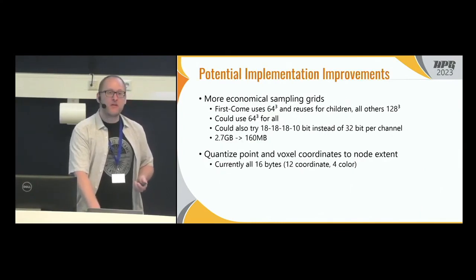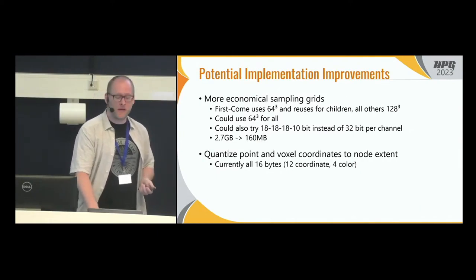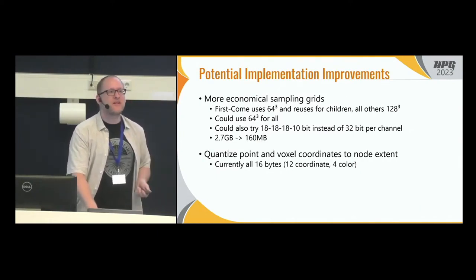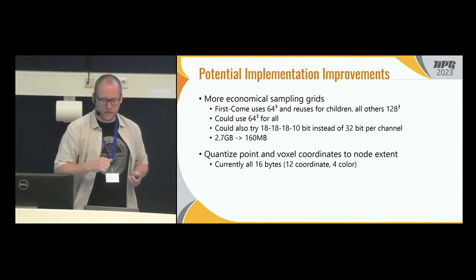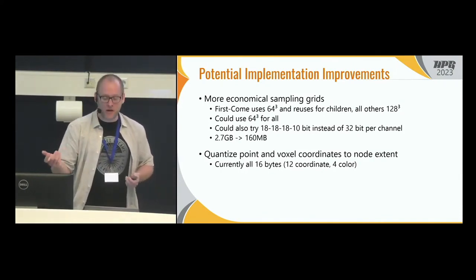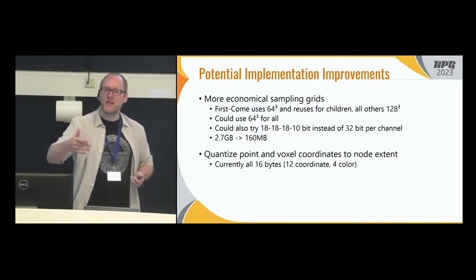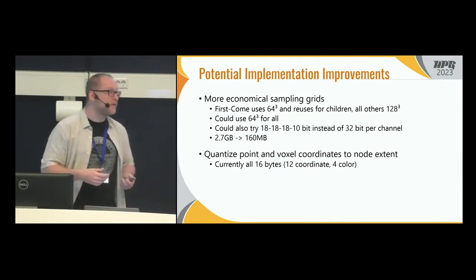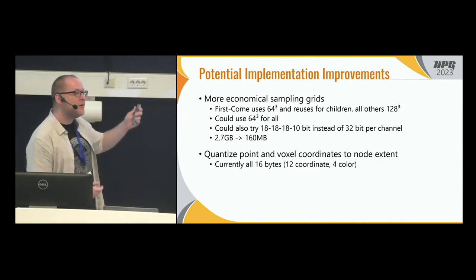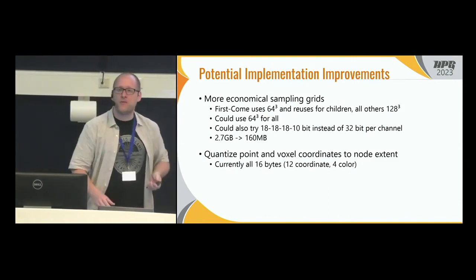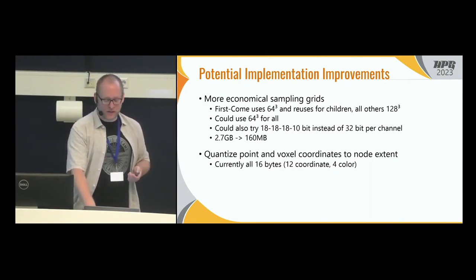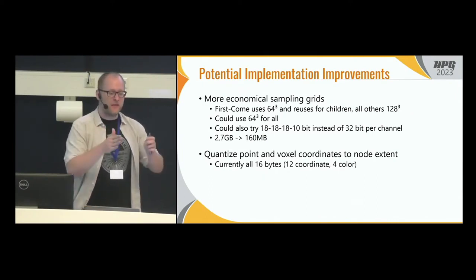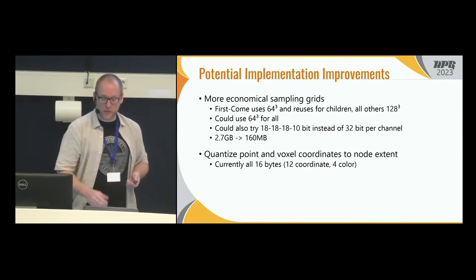There are potential implementation improvements. We used 2.7 gigabytes for the sampling grids, but there are ways to reduce it to 160 megabytes — for example, using a grid size of 64 instead of 128 and reusing it eight times for all children. A reviewer also noted that instead of one integer per color channel and counter, we could use a bit pattern of 18-18-18 for colors and 10 for the counter to compute sums of up to around 1,000 points. Another low-hanging fruit is quantizing points on voxels, since we currently use almost 16 bytes per voxel, which is wasteful. Points in leaf nodes also benefit from fixed-precision integers.